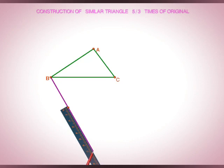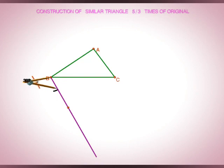Since the required triangle is 5 by 3 times and the larger part is 5, divide this ray into 5 equal parts such that the length of BB1 is equal to B1B2, B2B3, B3B4, and B4B5.